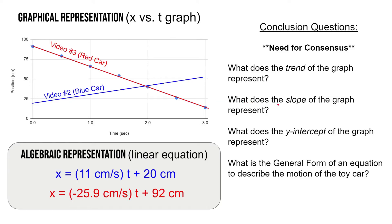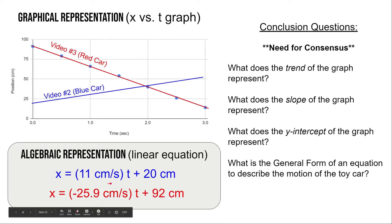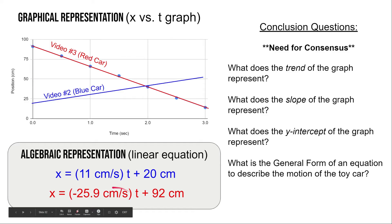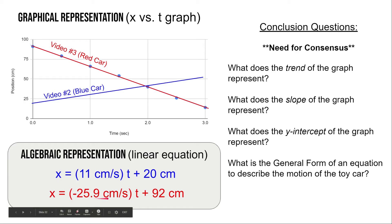That leads to our second question: what does the slope of the graph represent? The blue car in video 2 had a slope of 11 centimeters for each and every second, and the red car in video 3 had a slope of approximately negative 26 centimeters each and every second. Looking at the videos, all of the red cars are traveling faster than the blue cars, and notice we have a higher value slope. Think about what these units are telling us — centimeters for each and every second. The blue car travels 11 centimeters per second and the red car travels negative 26 centimeters each and every second.